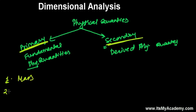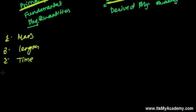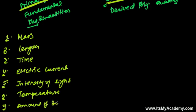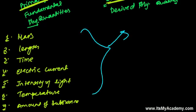The fundamental physical quantities are: first, mass; second, length; third, time. These fundamental quantities do not depend on any other things. Then we have electric current, intensity of light, temperature, and finally the seventh one — amount of substance.